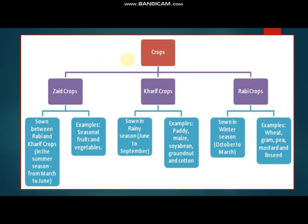With the help of this figure, we can see that crops are basically divided into three types: Zaid crops, Kharif crops, and Rabi crops. Zaid crops are sown between Rabi and Kharif crops in the summer season from March to June; examples are fruits and vegetables. Kharif crops are grown in the summer season from June to September; examples include paddy, maize, soybean, groundnut, and cotton.